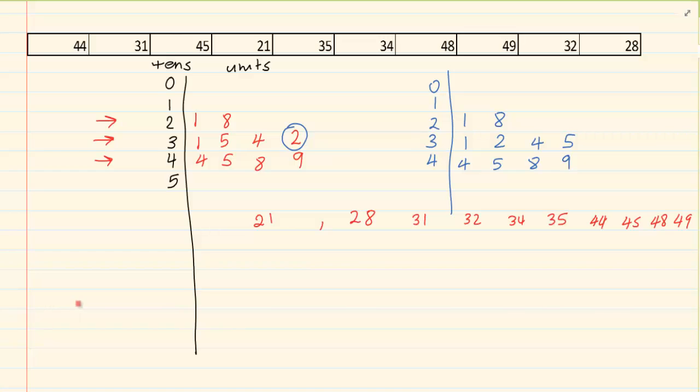Now, how do we get the mode? The mode means what is most repeated. Now, if you look at this diagram, there is nothing that was repeated. So in this case, we don't have a mode. But if our data had something that was repeated, so let's say I have another 44 here. Then that means at 44, I would have had two groups and the mode would have been 44.